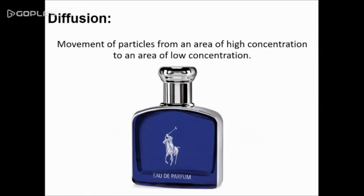You can try this process of diffusion at home by simply taking a bottle of cologne or perfume and opening it up and leaving it in the room. Over time, the room is going to begin to smell like the cologne or perfume because molecules within the bottle are going to diffuse from the area of high concentration — the bottle itself — to an area of low concentration — the rest of the room.